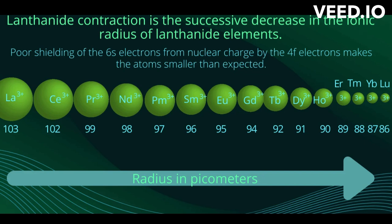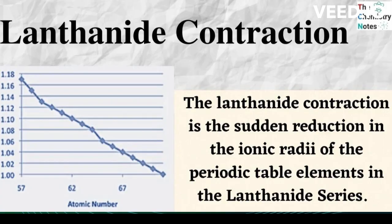The lanthanides have a unique property: with each increase in atomic number across the group, an electron is added to an inner incomplete subshell rather than to an outer level. This property of selectively filling inner levels results in a progressive decrease in the ionic radius of the trivalent lanthanide ions from lanthanum 3+ to lutetium 3+, referred to as lanthanide contraction.